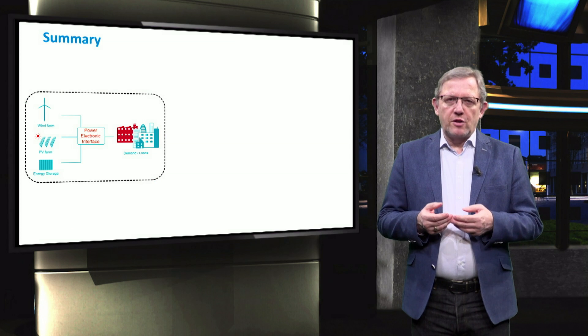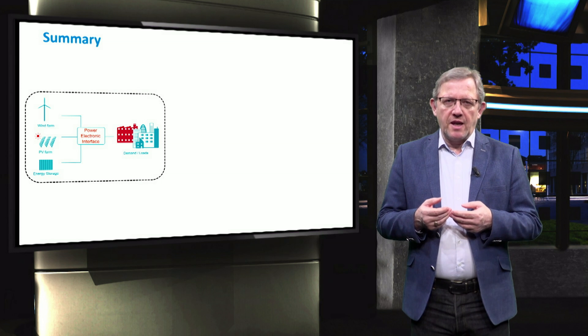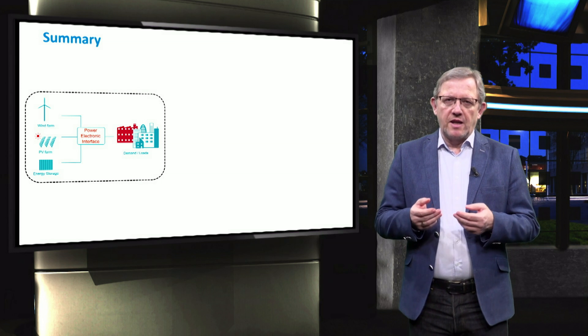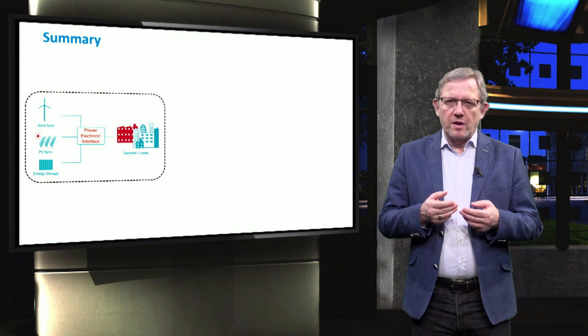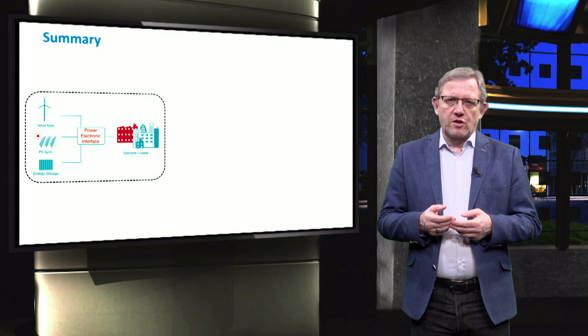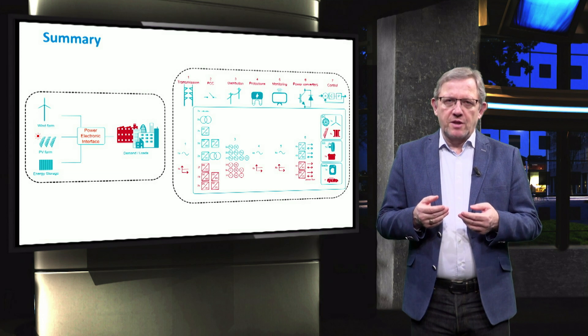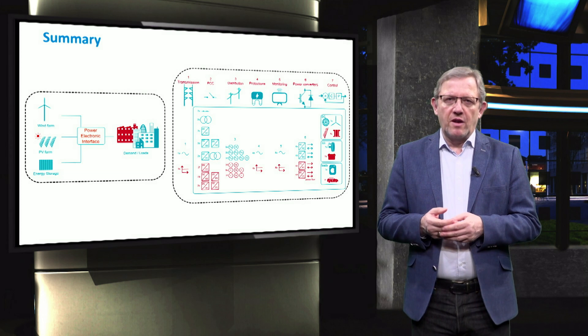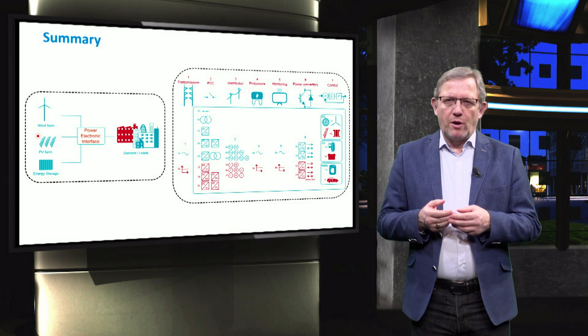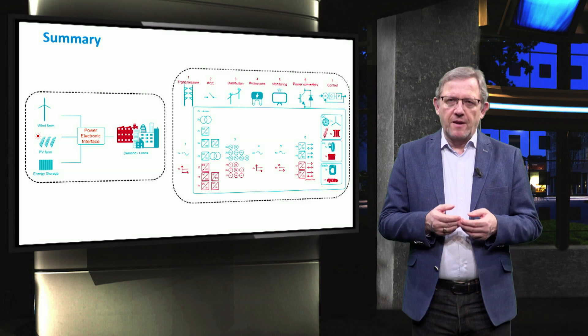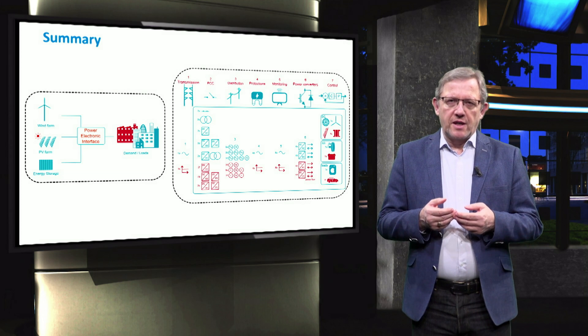In summary, we introduced power electronic interface as a key element to interconnect electrical AC and DC components like renewables, loads and storage. Then the general schemes of transmission and distribution level were described to power both AC and DC components. In the next video, we review the characteristics.